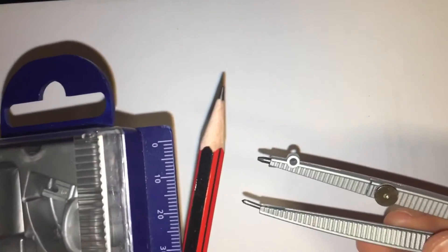Here we are going to draw a 90 degree angle with compass, ruler and pencil.